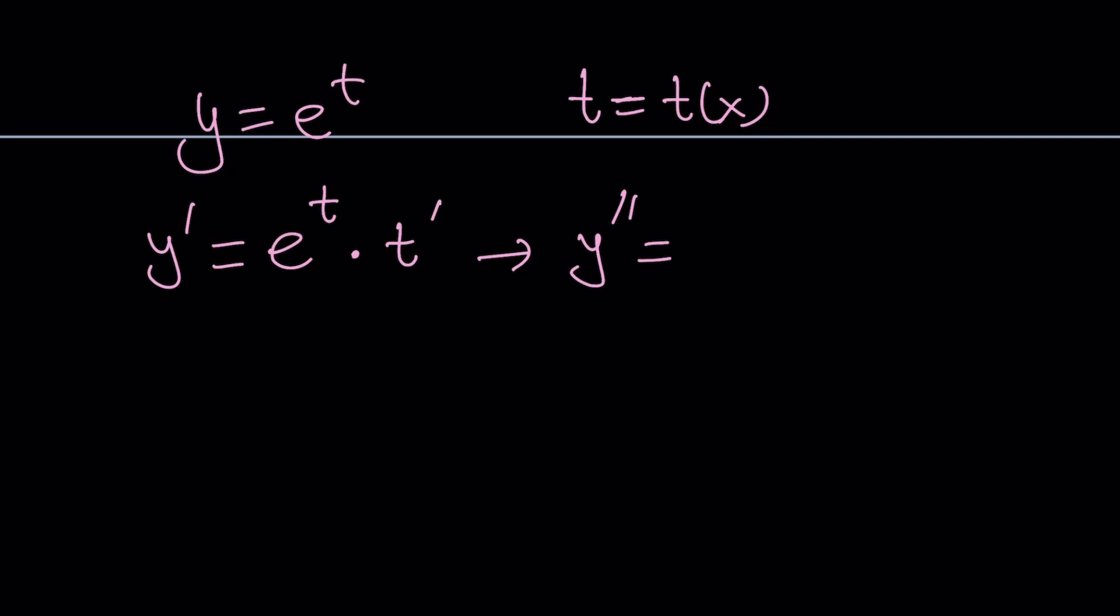Remember, t is a function of x, so kind of like f(x) or t(x). So when we differentiate it, we have to consider the chain rule. We didn't have to do that with e^x because the derivative of x with respect to x is 1. So let's differentiate this.